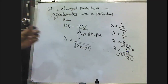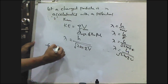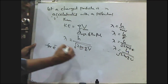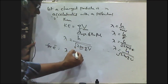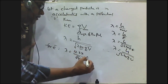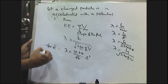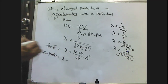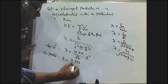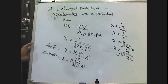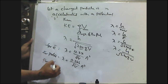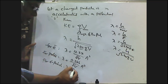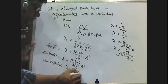For simplification, if we substitute fixed values of mass and charge for specific particles: for an electron, lambda = 12.27 / √V angstroms; for a proton, lambda = 0.286 / √V angstroms; and for alpha particles, lambda = 0.101 / √V angstroms.